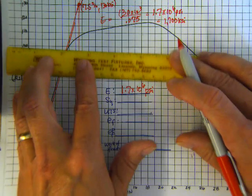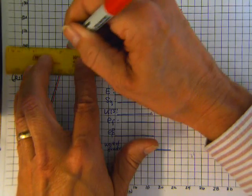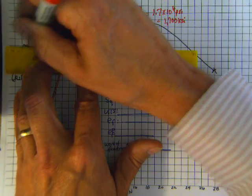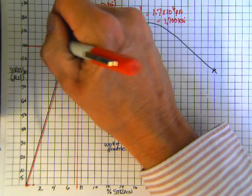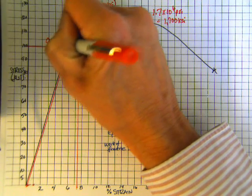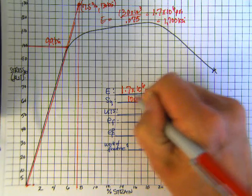The offset line is going to be very close to the stress-strain curve. And so, reading across, looks like that's right at about 99 or 100 KSI. Okay. So we'll round that to 100 KSI.